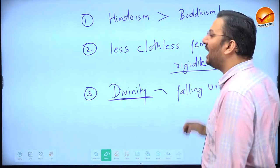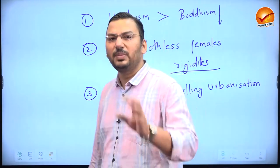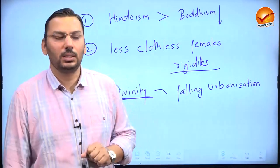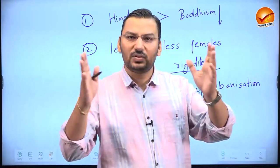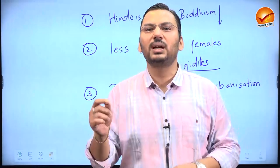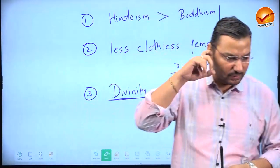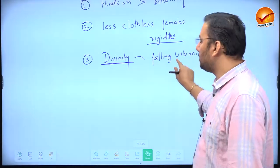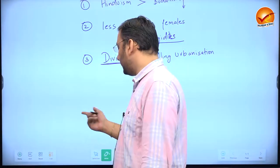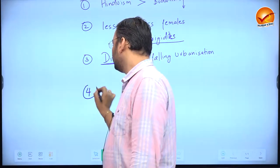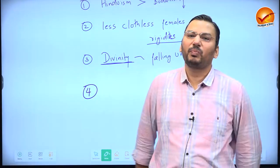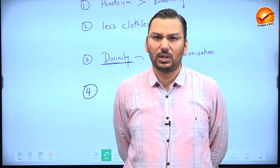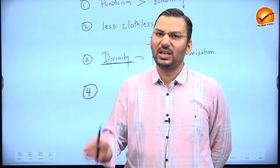By contrast, the poetries of Ghalib and Mir indicate a very vibrant urban society. In rural villages, people don't engage in shero-shairi or secular art forms — their art is mainly religious. That is why divinity dominates medieval sculpture, and this links to our next point about southern India.